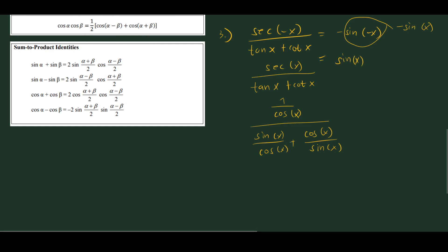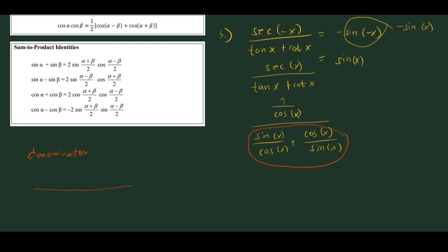Let's focus on simplifying the denominator. The common denominator for sin x/cos x + cos x/sin x is cos x · sin x, giving us (sin²x + cos²x)/(cos x · sin x). By the Pythagorean identity, sin²x + cos²x = 1, so the denominator simplifies to 1/(cos x · sin x).